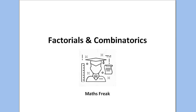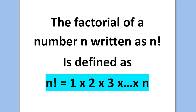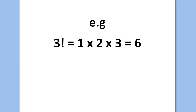Today we're going to talk about factorials and combinatorics. The factorial of a number n, written as n factorial with an exclamation mark, is defined as n factorial equals 1 times 2 times 3, all the way up to n. For example, 3 factorial equals 1 times 2 times 3, which equals 6.